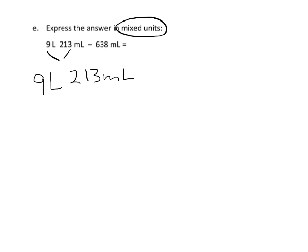On this slide, let's take the 9 liters and the 213 milliliters and convert everything into just milliliters so we don't have mixed units. The nine liters is nine thousand milliliters, plus the two hundred thirteen milliliters we already had, so that equals nine thousand two hundred thirteen milliliters. Now we're supposed to subtract out six hundred thirty-eight milliliters.